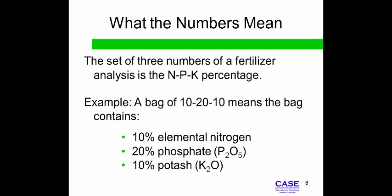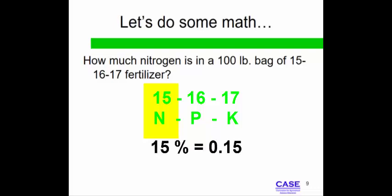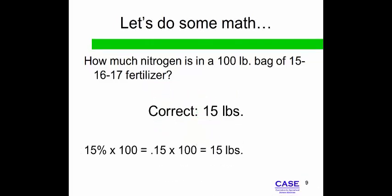The next slides will demonstrate how to determine the amount of each primary fertilizer ingredient in a single bag, and how to use that information to determine quantities of nutrients being applied to soil. The figures 15, 16, and 17 refer to the amount of nitrogen, phosphorus, and potassium respectively. Nitrogen makes up about 15% of the fertilizer. 15% expressed as a decimal is 0.15. Multiply 100 pounds by that decimal — the answer is 15 pounds of elemental nitrogen in the fertilizer.